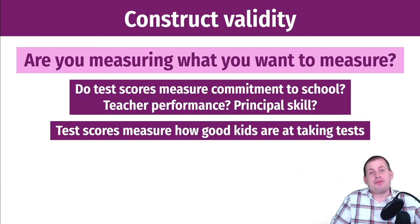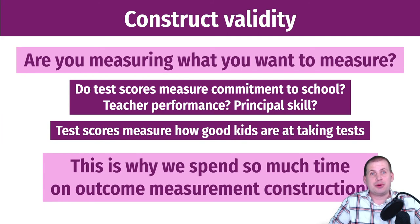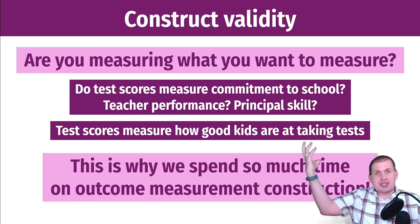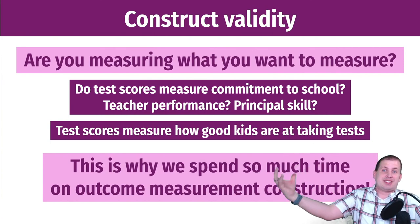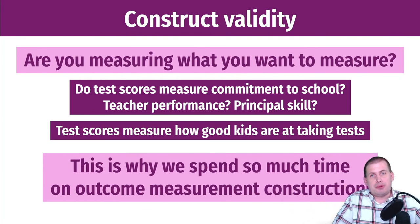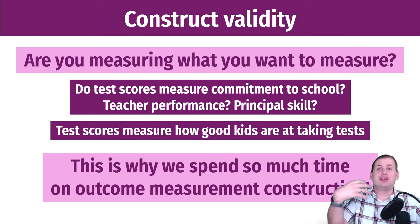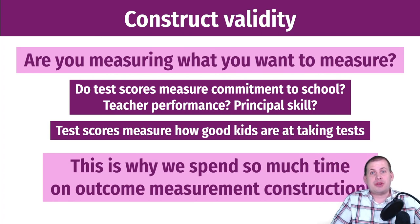This is why we spent so much time on the outcome measurement construction assignment — it's the only way to make sure you're actually searching where the outcome is, rather than just where the light is. You might scatter around in the light area and find data, but you'll never find the program effect you care about. The point is to ensure you have construct validity in your outcomes so you can actually say this program had an effect on society. Without construct validity, we're not measuring what we want to measure. With it, we'll hopefully find the key lost in the bushes.